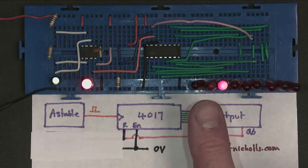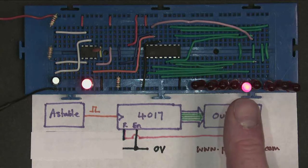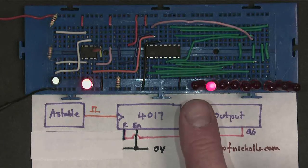So what's happening? When the output Q6 comes on, which is now, it resets the counter to 0.